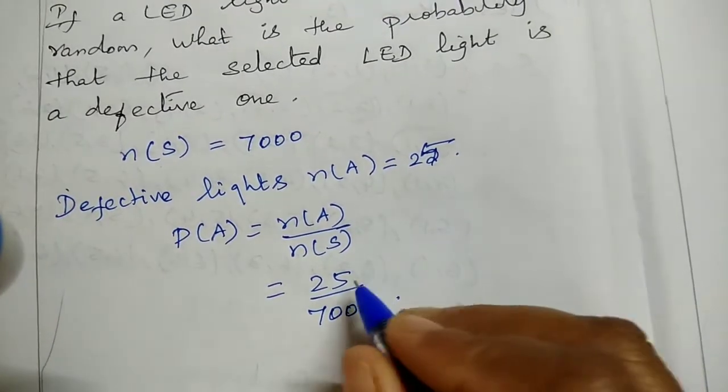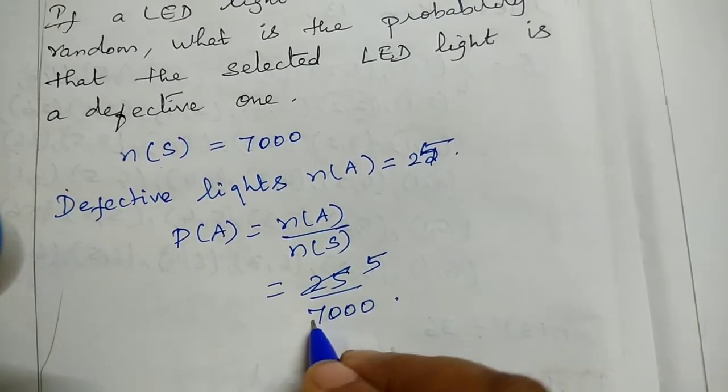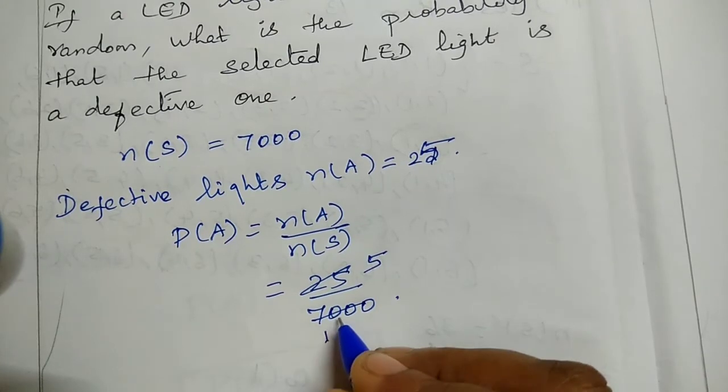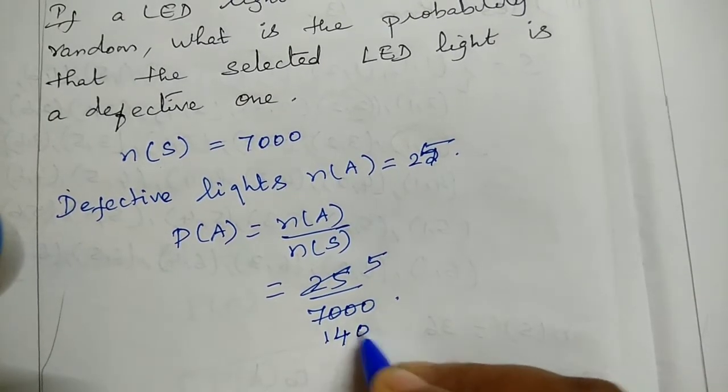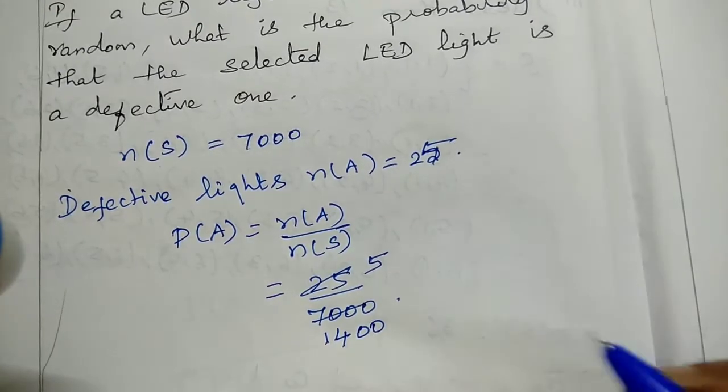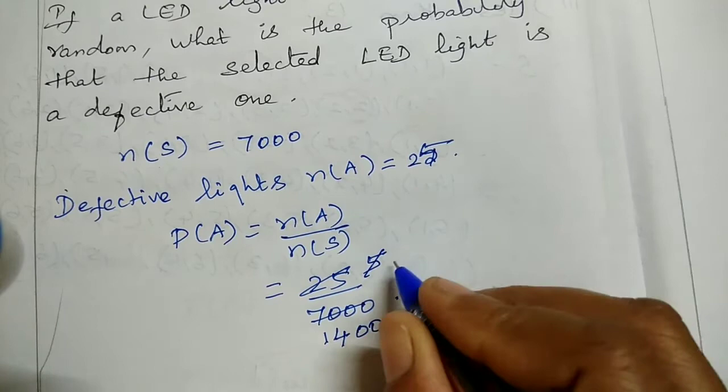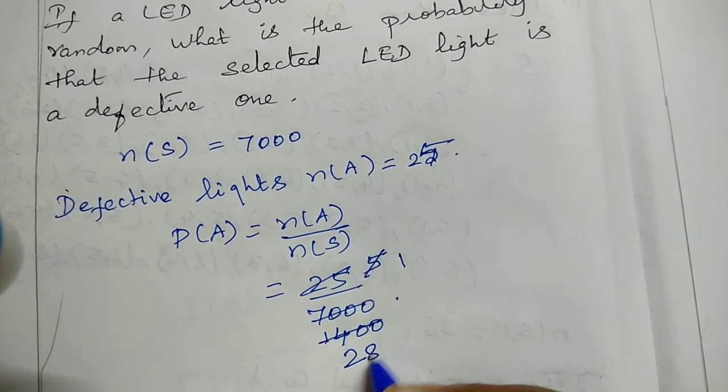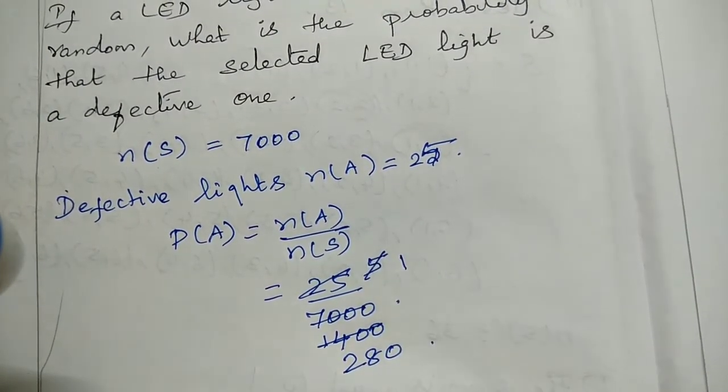Now cancel the terms. Dividing: 5 into 25 is 5, 5 into 5 is 1, 5 into 7000 gives us 1400. Then divide by 5 again: 280. So we get 1 over 280.